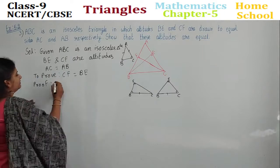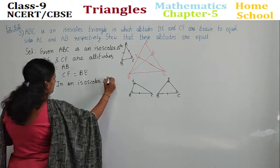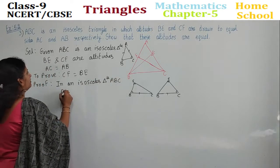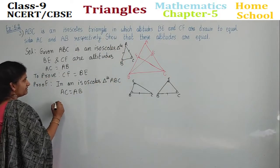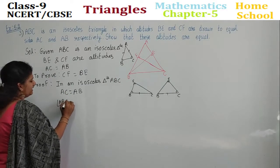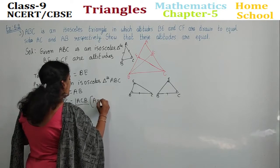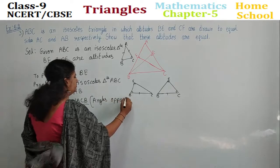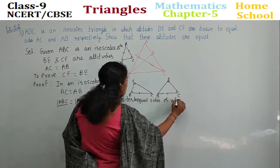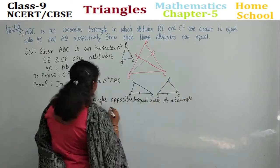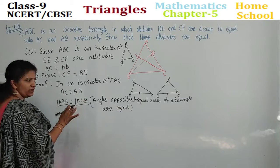We start comparing the triangles. In isosceles triangle ABC, given AC is equal to AB. Then I can say angle ABC is equal to angle ACB, because angles opposite to equal sides of a triangle are equal. Next: side equal, angle equal — we have proved.